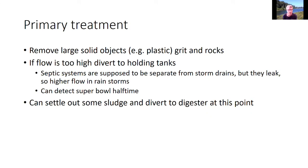In primary treatment, you remove large solid objects — people flush all kinds of stuff down the toilet. Grit and rocks that get into the system need to be settled out. If flow is too high as it comes into the plant, it needs to be diverted to holding tanks. This happens often with heavy rain because septic systems are supposed to be separated from storm drains, but they do leak, so there's much higher flow during rainstorms. At times when everybody uses the bathroom simultaneously — like at halftime of the Super Bowl — you might get a big pulse coming through.